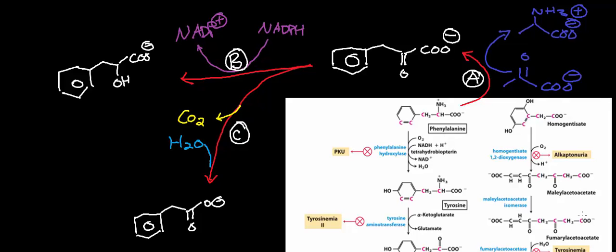Welcome back to the playlist on amino acid catabolism. Before we really go into the other aromatic amino acids, what I want to do is think a little bit about phenylketonuria. So we said that in phenylketonuria, the person has a deficiency of phenylalanine hydroxylase.